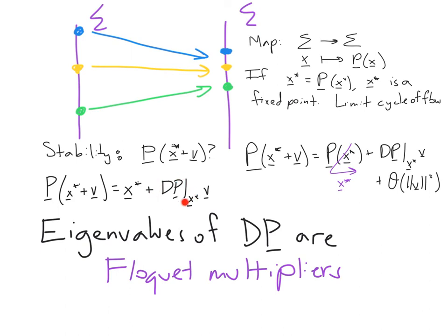We're interested in whether this matrix is contracting this vector or expanding this vector. And so we actually want to compare the Floquet multipliers to 1. So we ask the question, is the magnitude of these greater than 1 or is the magnitude of these less than 1?